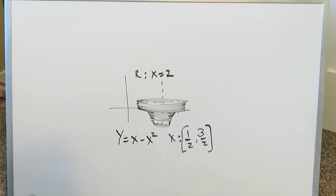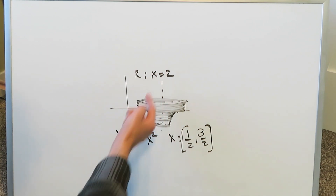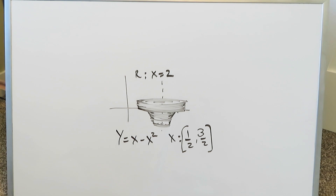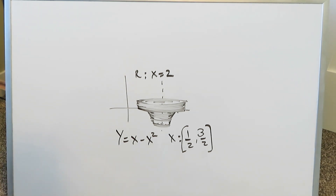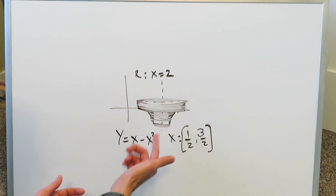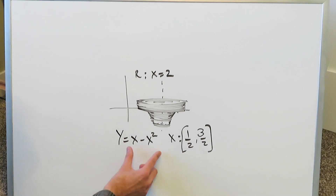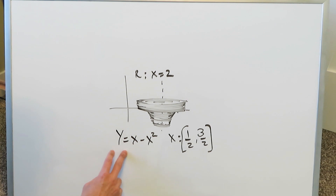y equals x minus x squared — a parabolic function. We have an interval from 1/2 to 3/2, and we're rotating it around a vertical line of axis: x equals 2. If anyone would be hoping to do this by the disk or washer method, you would have to convert this into the form x equals, because you have a vertical line of axis. But you couldn't cleanly isolate x, so you have to think about the cylindrical shell technique.